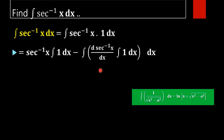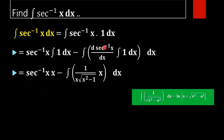Now by applying that method, we can rewrite the terms. Which is: sec inverse x into x, minus 1 by x into root of x squared minus 1, into x dx. That is, the derivative of sec inverse x is 1 by x into square root of x squared minus 1, and the integral of 1 dx is x.